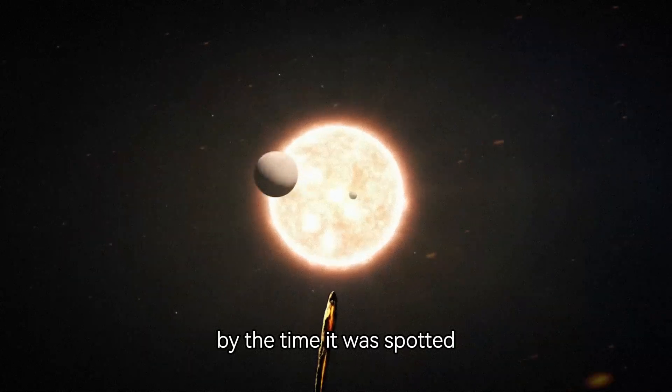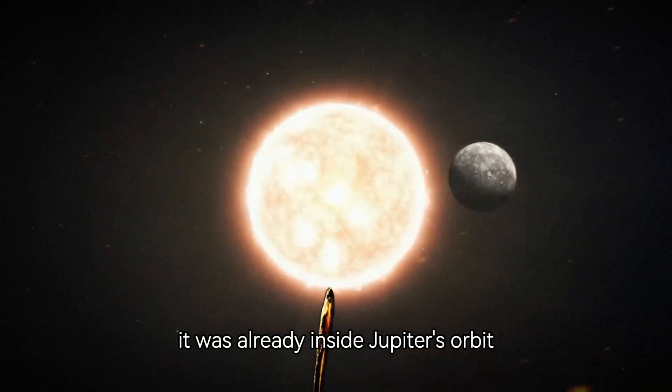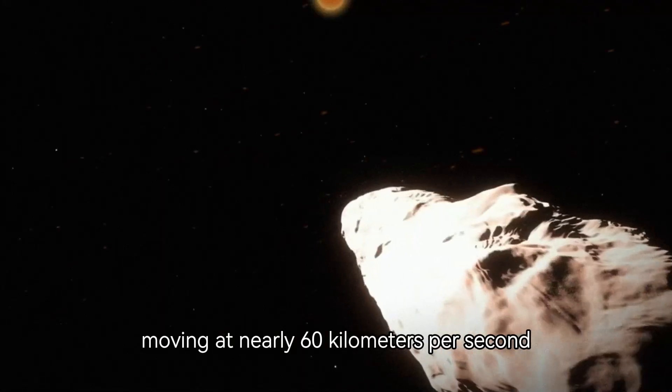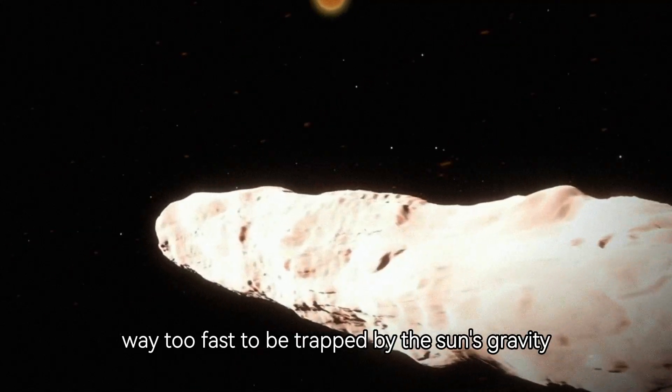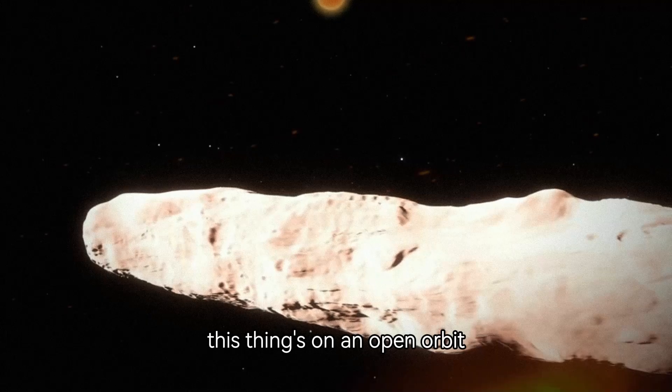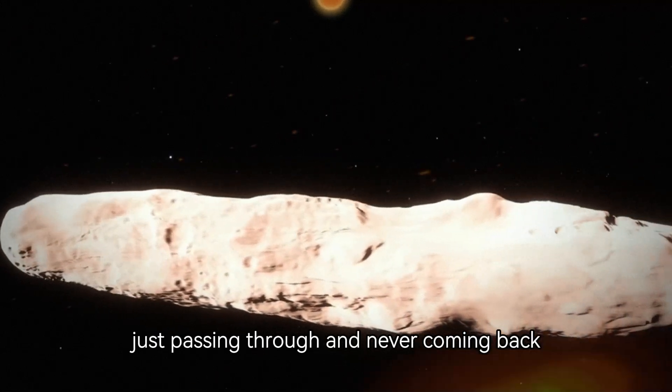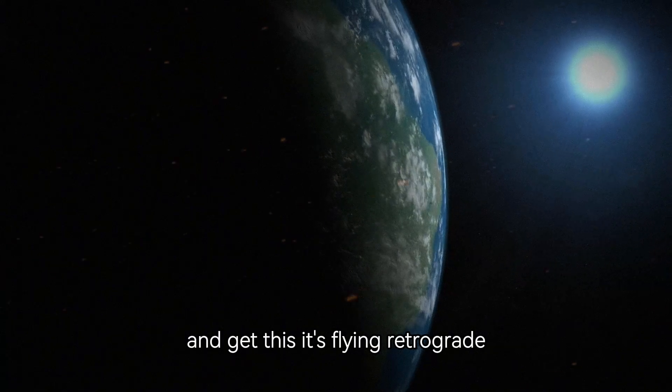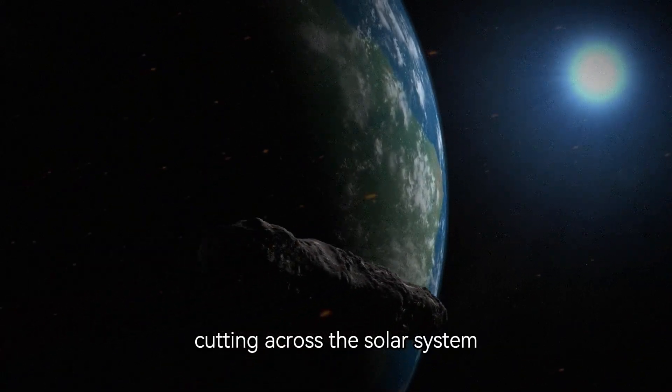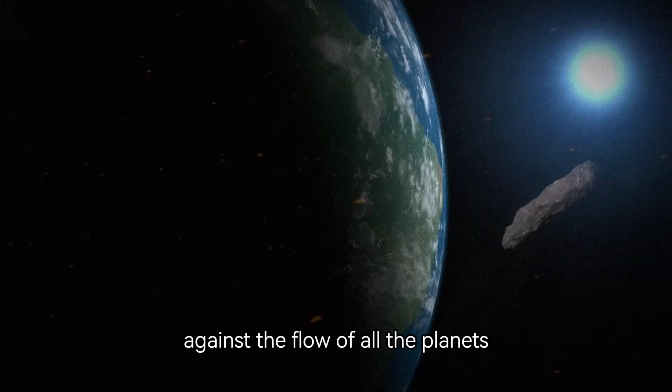By the time it was spotted, it was already inside Jupiter's orbit, moving at nearly 60 kilometers per second, way too fast to be trapped by the sun's gravity. This thing's on an open orbit, just passing through and never coming back. And get this, it's flying retrograde, cutting across the solar system against the flow of all the planets.